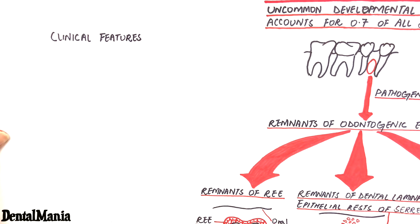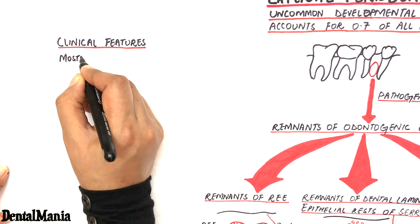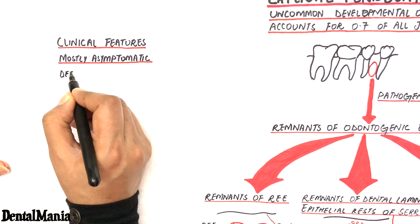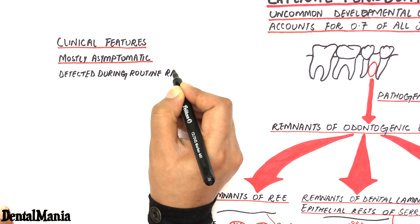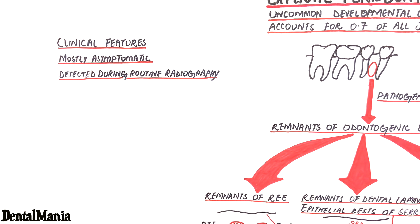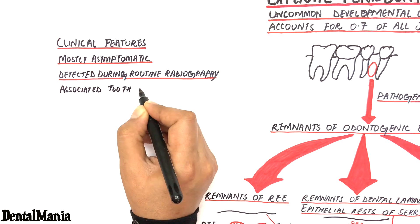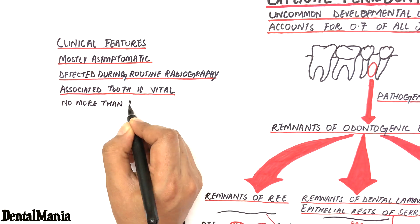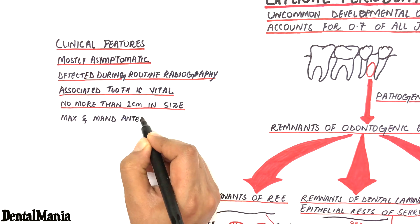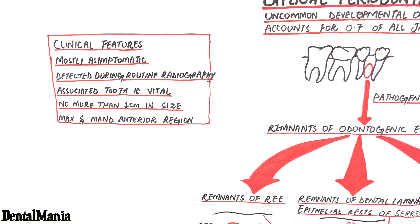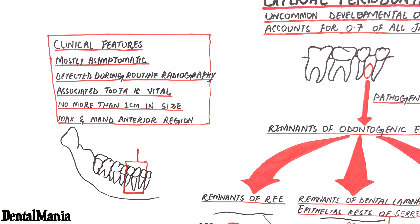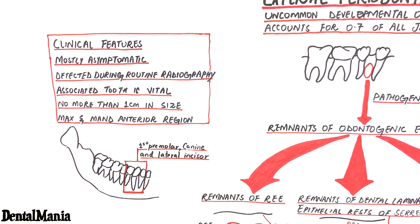Looking at some clinical points of lateral periodontal cyst: the cyst is mostly asymptomatic and is detected during routine radiographic examination. The tooth with which the cyst is associated is always vital and the cyst is no more than 1 cm in size. It is most commonly found in the first premolar, canine, and lateral incisor region of the mandible.